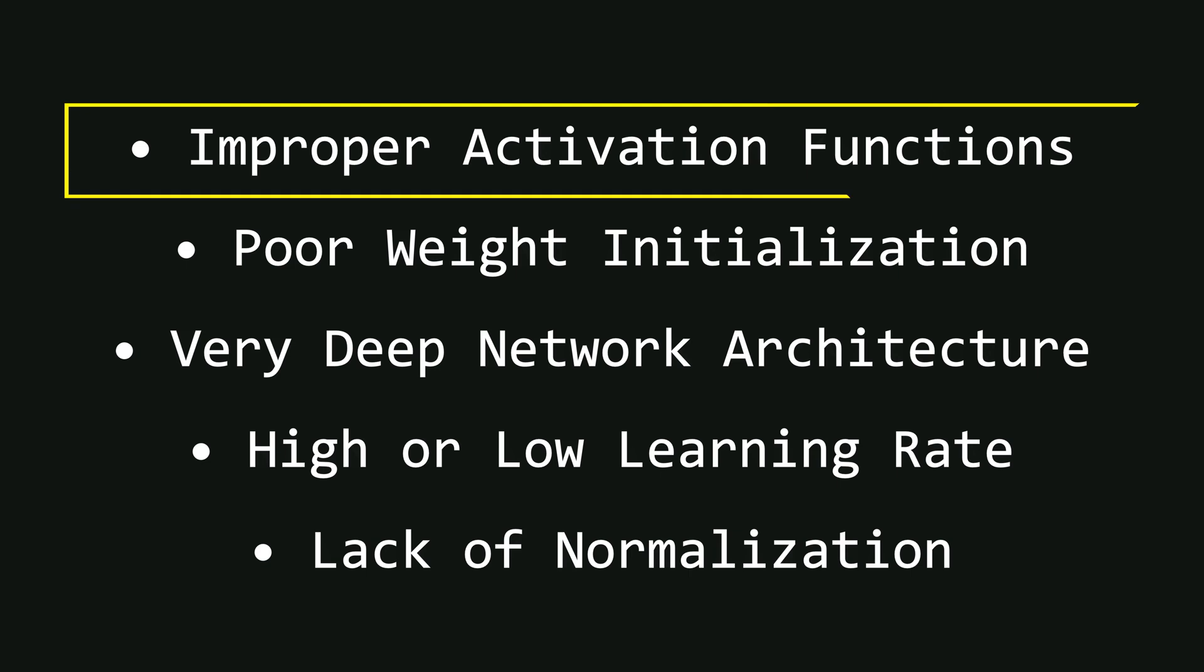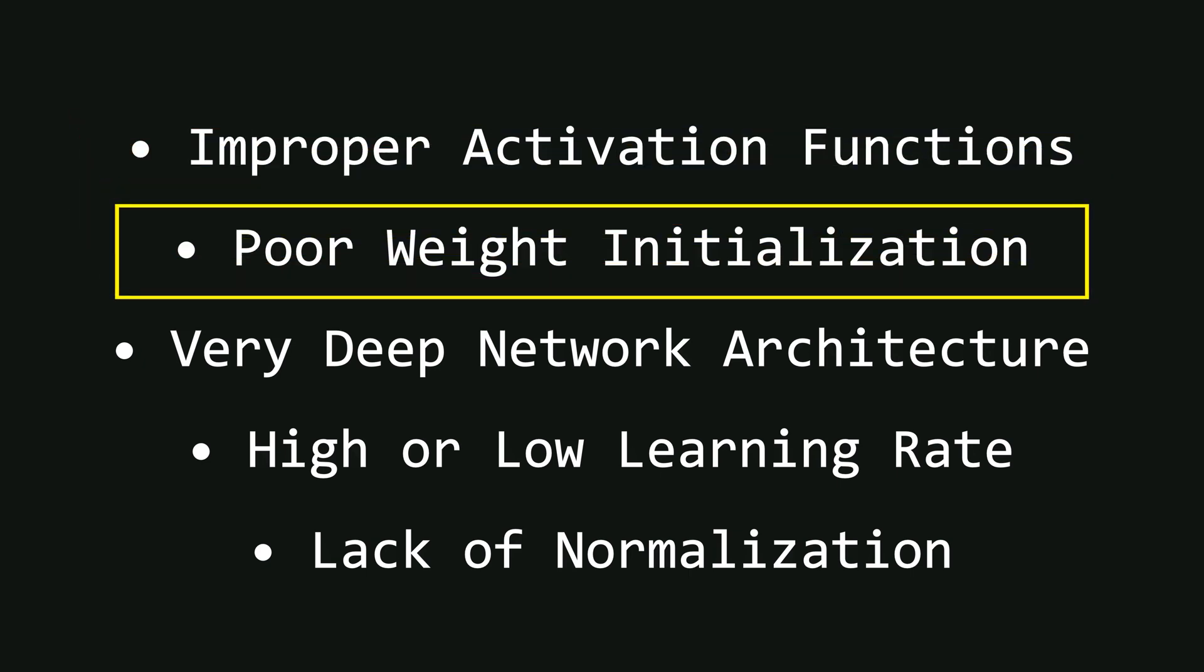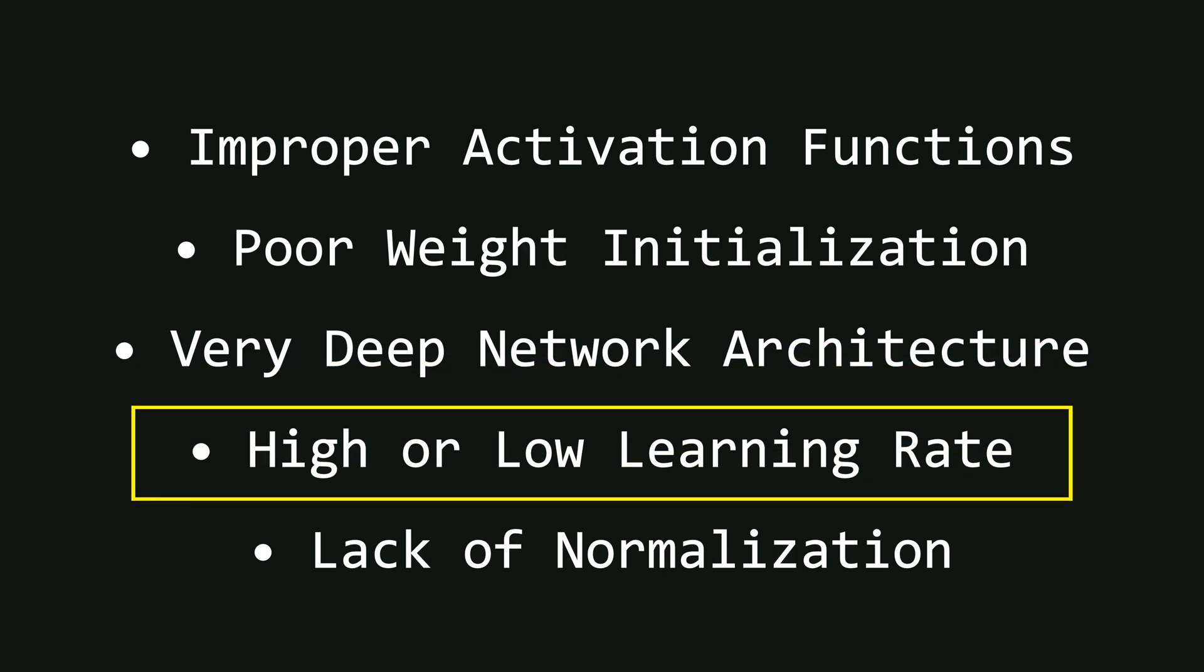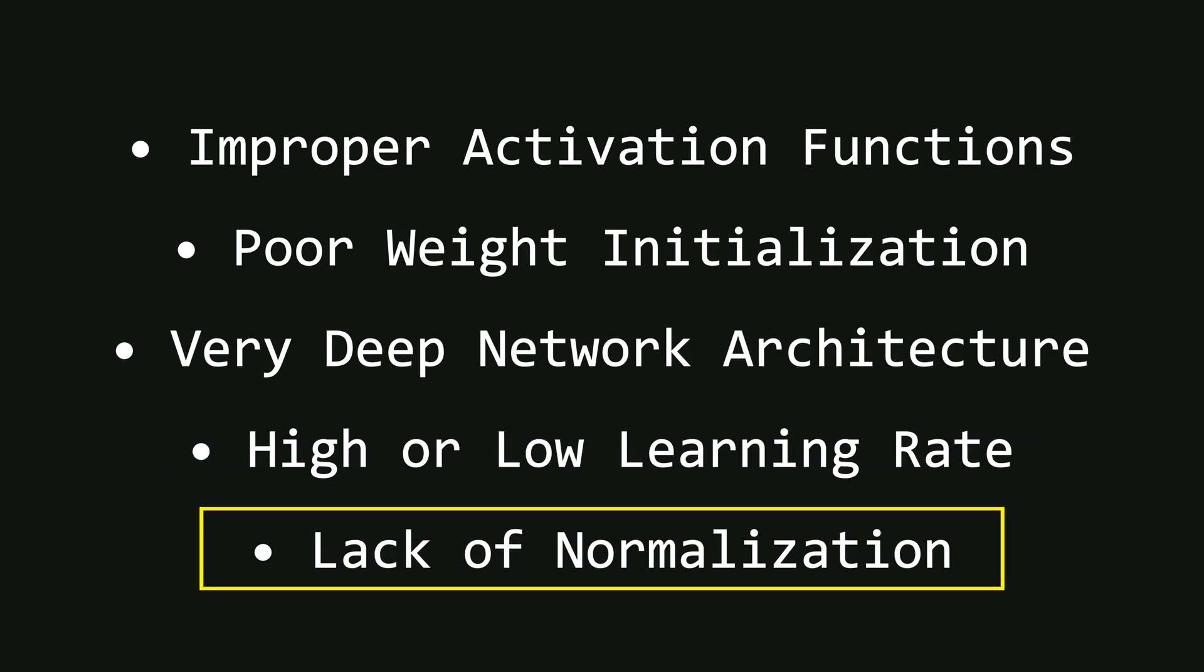Apart from activation derivatives and weight values, there are other causes as well. If the network is too deep, the gradient can decay or grow exponentially, causing problems. If the learning rate is too high, it can lead to exploding gradients, while a very small learning rate can potentially cause vanishing gradients. Additionally, if the input data is not normalized, it can indirectly contribute to these problems, because unscaled inputs can push activations into extreme regions affecting gradient flow.